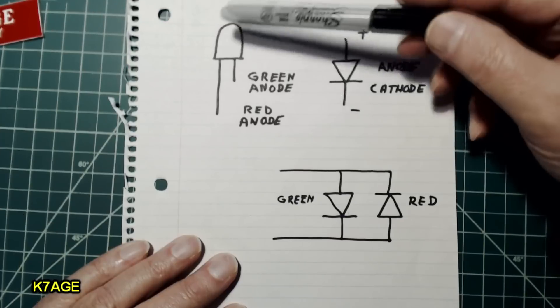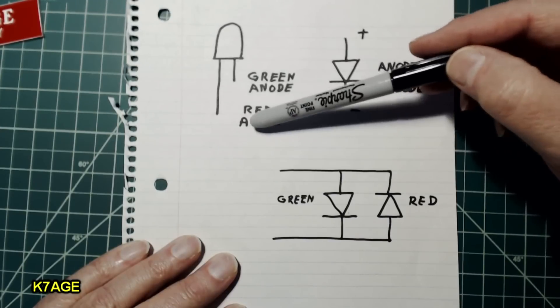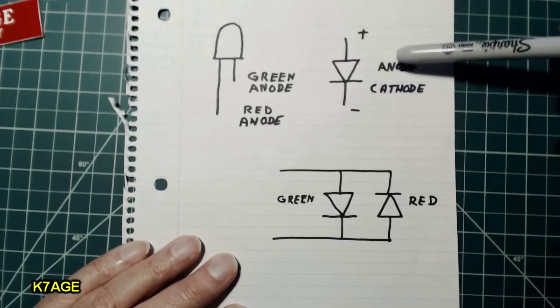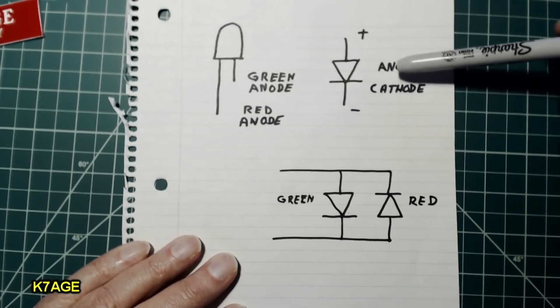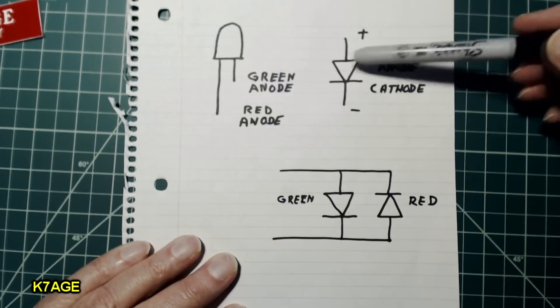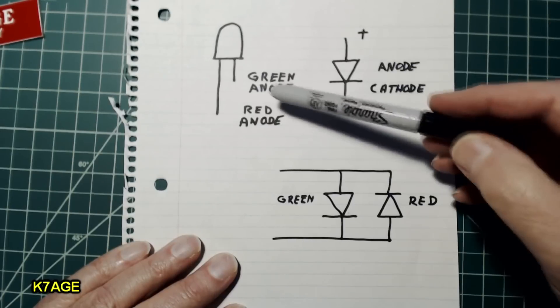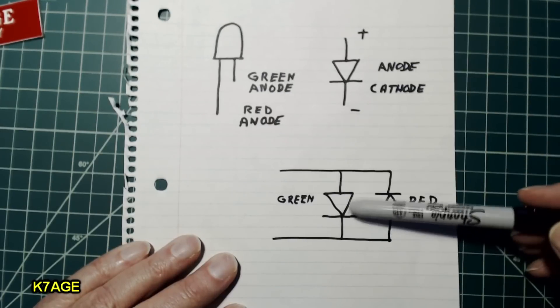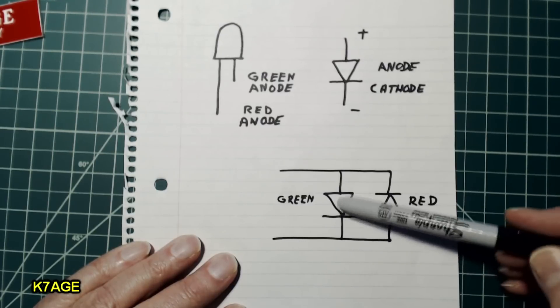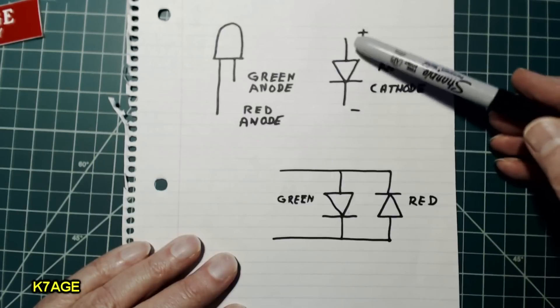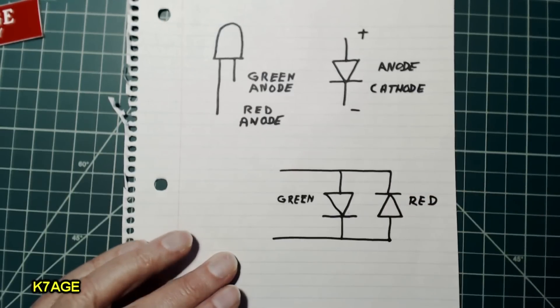So I drew out the package for the LED. The short lead is for the green anode. The longer lead connects to the red anode. So an LED is made up of an anode and a cathode. And we want to apply the positive voltage towards the anode side of the LED and the minus voltage towards the cathode. So inside the package is two LEDs back-to-back. And this is the green one. And this is the red one. And here's the anode. We want that to go towards the positive voltage. So this will go off to our 12 volts with a resistor.